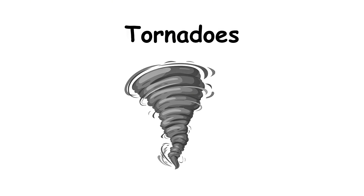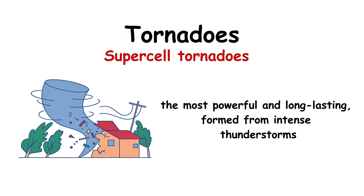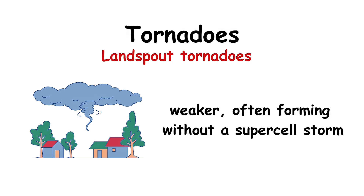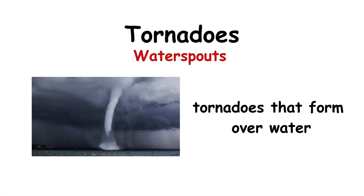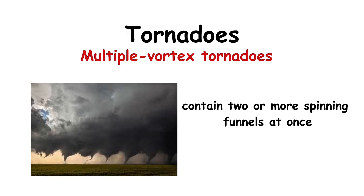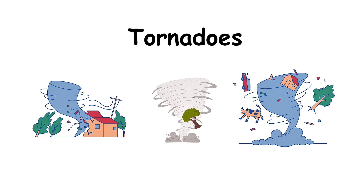Types of tornadoes include supercell tornadoes — the most powerful and long-lasting, formed from intense thunderstorms; landspout tornadoes — weaker, often forming without a supercell storm; waterspouts — tornadoes that form over water; and multiple vortex tornadoes, which contain two or more spinning funnels at once. Tornadoes can destroy homes, uproot trees, flip vehicles, and cause massive loss of life and property in minutes.